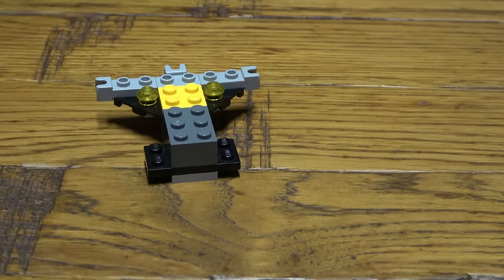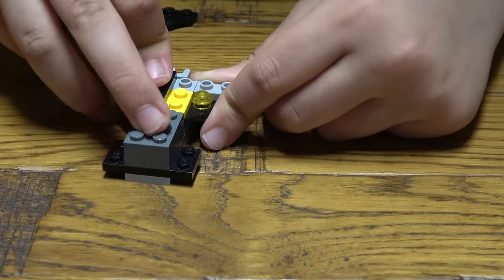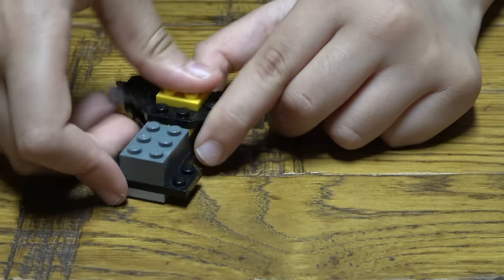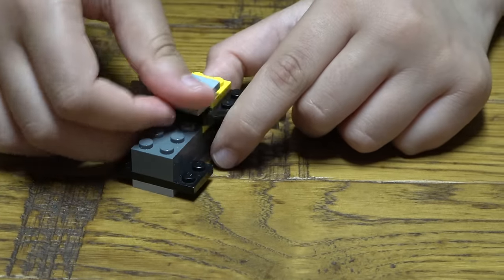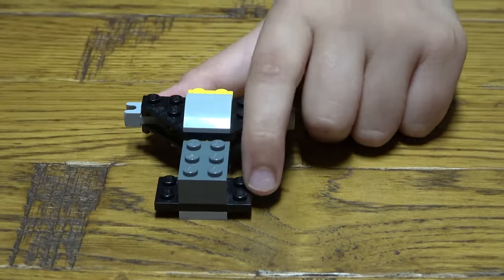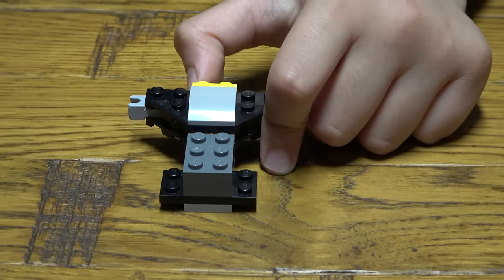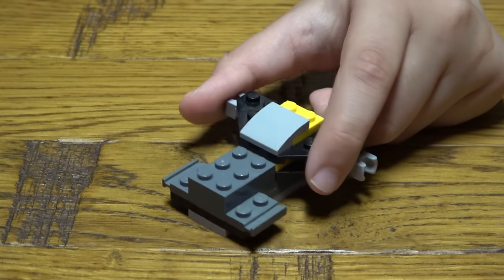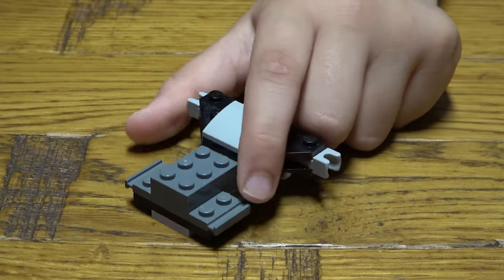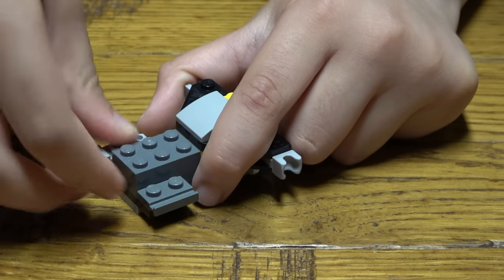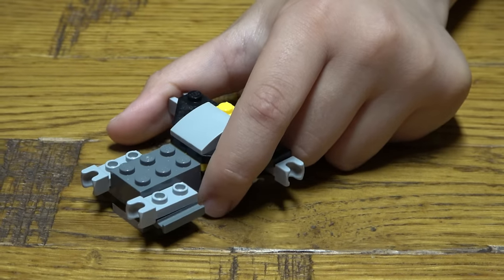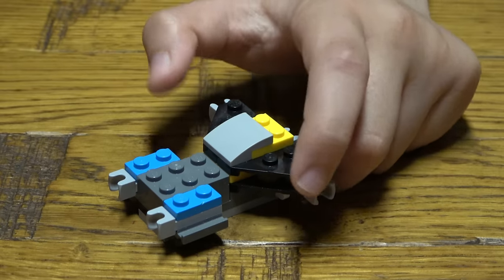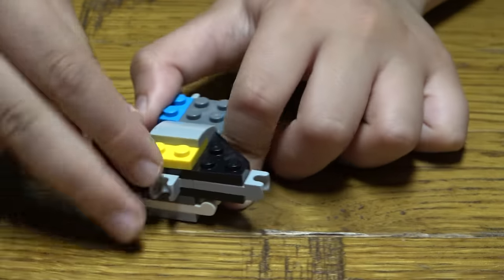So then next we're going to place that there like so, and then this here, this here. Then next we're going to place two of these here. Next we're going to place these two here. Next we're going to place these two here like so.